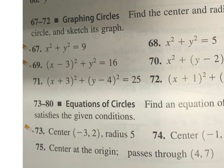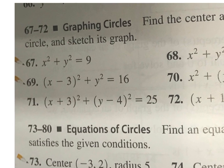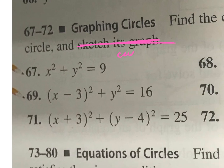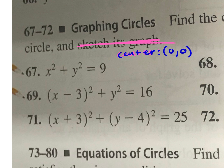Let's do some practice. For problem 67, find the center and radius. We're not adding anything to x or y, so the center is (0, 0). To find the radius, take the square root of the right-hand side: the square root of 9 is 3, so the radius is 3.